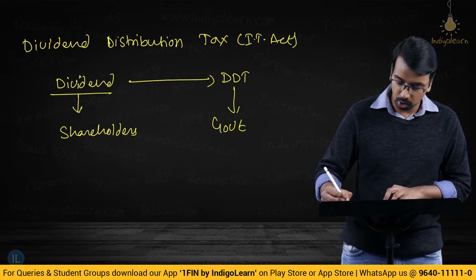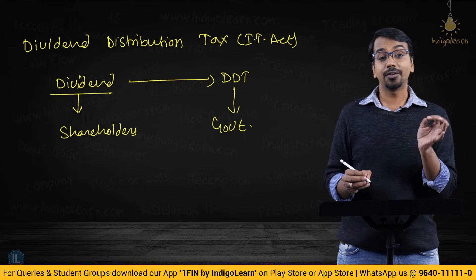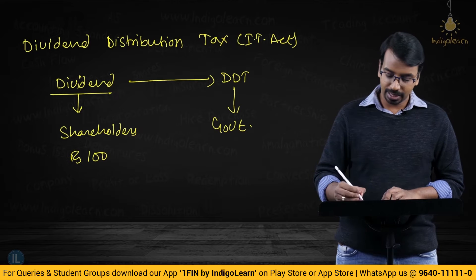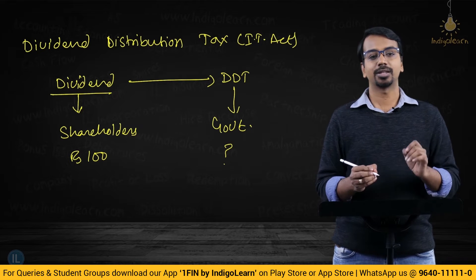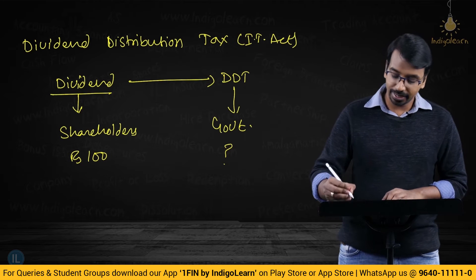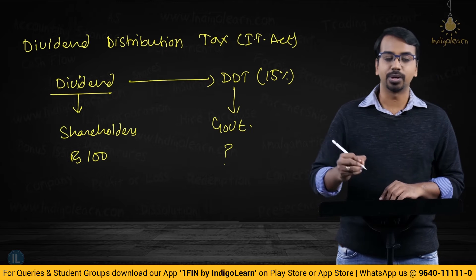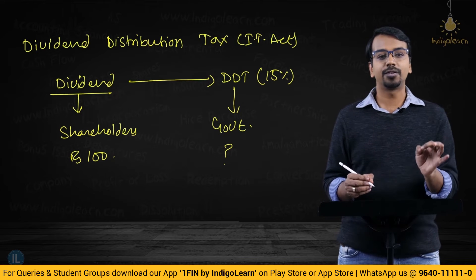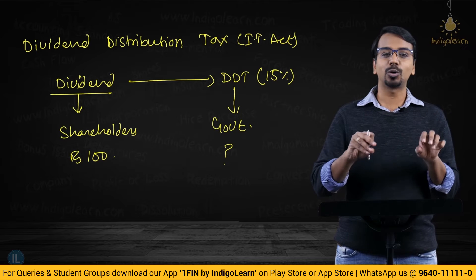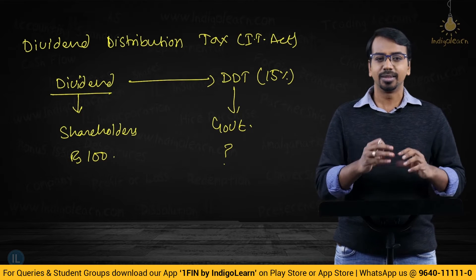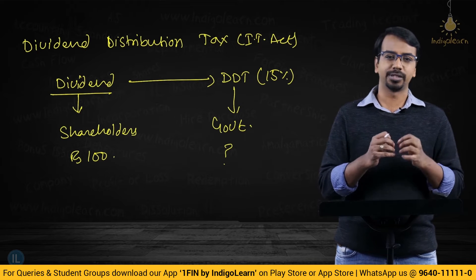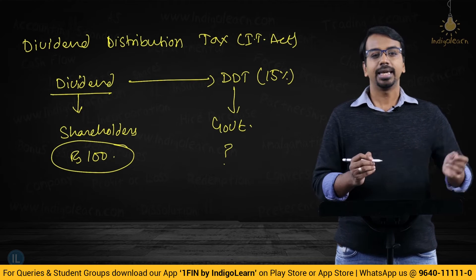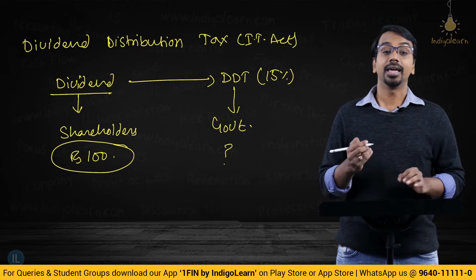Say for example a company has declared and paid dividend of rupees 100. Then how much should be the Dividend Distribution Tax to be paid to the government? The rate of Dividend Distribution Tax is 15%. But that does not mean 100 into 15% equals 15 rupees is the DDT. The manner to compute it is different — this is also called the grossing up provision. This provision assumes that the 100 of dividend paid to the shareholders is after deducting the DDT.